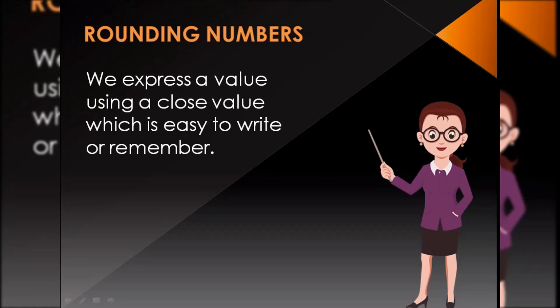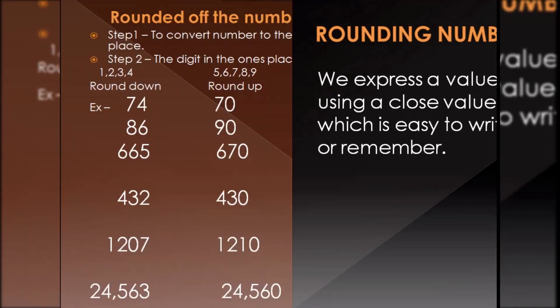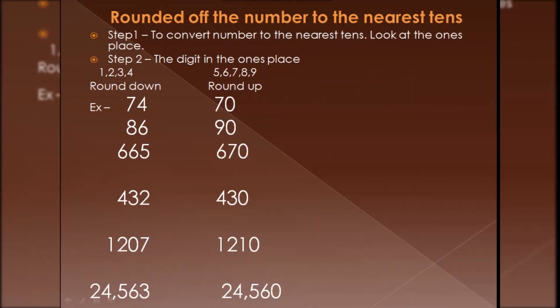Expressing a number by another number near to it, which is simpler to read, is known as rounding of a number. Now let's look at how to round a number to the nearest tens.